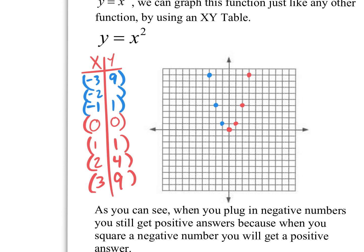Now let's graph this parabola — connect the dots and put some arrows on it. The arrows mean that it continues forever. If I wanted to, I could have plugged in 4 — what's 4 squared? 16. Obviously (4, 16) is off the graph, but if you did graph it, it would perfectly continue through that parabola.